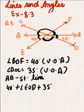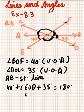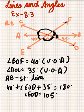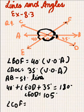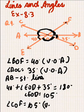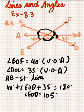Since angles on a straight line sum to 180 degrees, angle EOD equals 105 degrees. Now to find angle COF — these are vertically opposite angles to EOD, so angle COF also equals 105 degrees. It was very simple; we just had to observe what each angle is equal to.